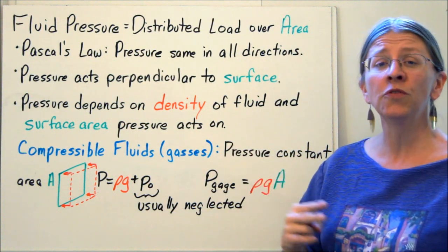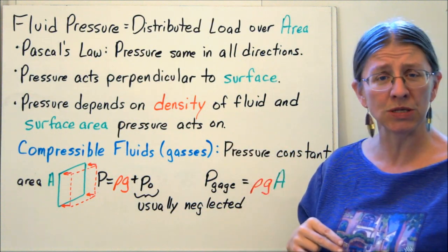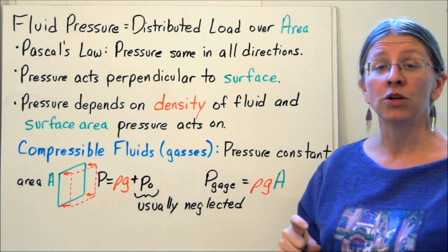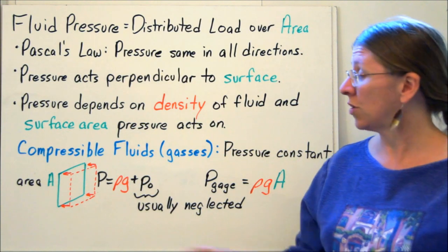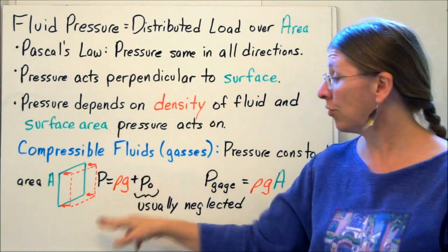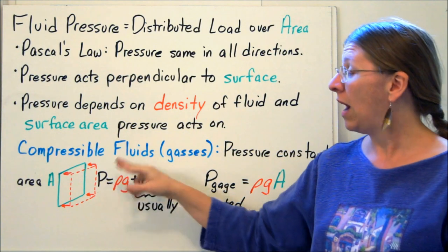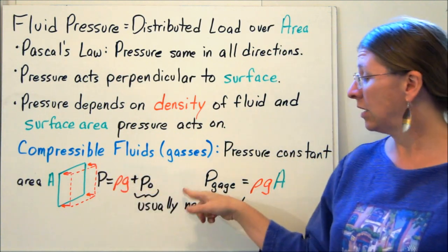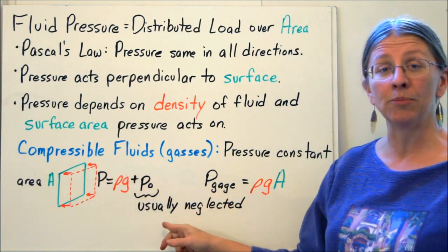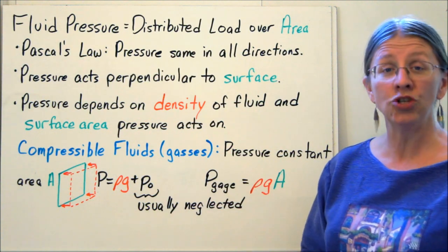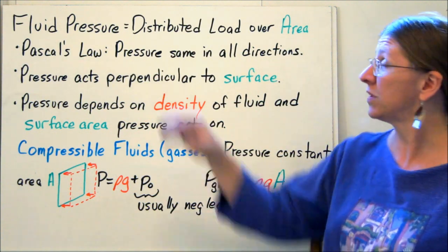We'll deal with two different kinds of fluids: compressible fluids and incompressible fluids. Compressible fluids are like gases, and the big thing here is that the fluid pressure is uniform. So along your whole area, the pressure is ρg plus whatever ambient pressure you have at all points. Generally, we're going to neglect that ambient pressure so that we're dealing with gauge pressure. Here, gauge pressure is just ρg times the area of your surface.